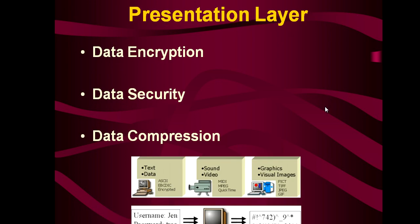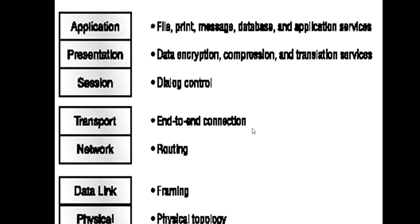The presentation layer's job is data encryption, security, and data compression. It also translates data from one format to another — for example, a username and password are encrypted and translated to another format before sending. The session layer establishes sessions and provides dialog control. To summarize: the application layer provides file, print, message, and database services; the presentation layer provides data encryption and compression; the session layer provides dialog control; the transport layer provides end-to-end connection; the network layer provides routing; the data link layer provides framing; and the physical layer provides physical topology.